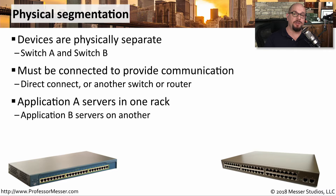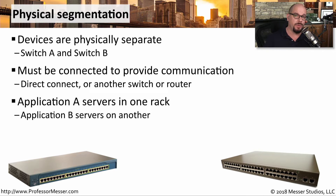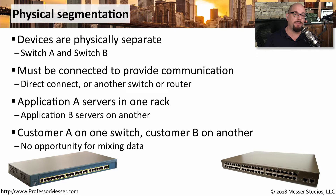This physical segmentation may also be based on the applications you're using. For example, you may have all of the Application A servers segmented in their own rack with their own switch, and all of your Application B servers segmented in a completely different rack with a completely different switch. Or this might help you keep customer information separated — all of customer A's information on one physical switch and all of customer B's servers and information on a physically separate switch.